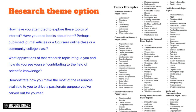You might not have done formal academia around these topics, but maybe you've done a Coursera course online, read some journals, or published something in the school magazine. Think about what applications of that research topic intrigued you and how you see yourself contributing to the field. Remember, this is an academia STEM-focused research program — you're demonstrating how you made the most of the resources available to you to drive a passionate purpose you have carved for yourself.